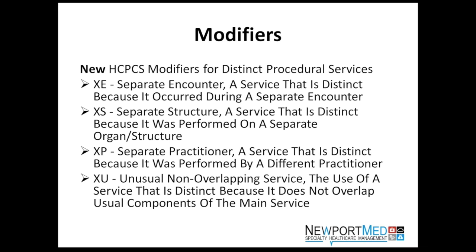Using the X modifiers will require providers to specify the circumstance for a distinct procedure in their documentation. The reason CMS established these modifiers is to prevent Modifier 59 from being abused to bypass NCCI edits. When you use a 59 modifier, even if the codes are considered inclusive, it can bypass claim edits — which may be correct in its use, but Medicare has identified the potential for abuse.